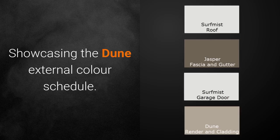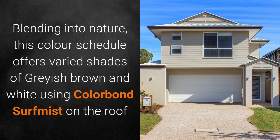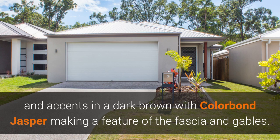Showcasing the Dune external colour schedule. Blending into nature, this colour schedule offers a varied shade of greyish browns and whites, using Colorbond Surf Mist on the roof and accents in a dark brown with Colorbond Jasper, making a feature of the fascia and gables.